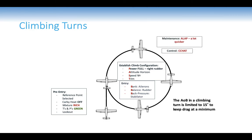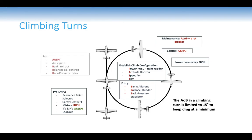ALAP cycle in the climbing turn goes quicker; controls use the C-CHAT check. Check you're maintaining 79 knots, looking for your target height, maintaining 15 degrees angle of bank, and balanced. Two outcomes: if you reach your height, level off; if you reach your reference point, exit the turn using VVP — anticipate attitude, speed, power, trim back into normal configuration, then bank rollout, balance, ease back pressure.